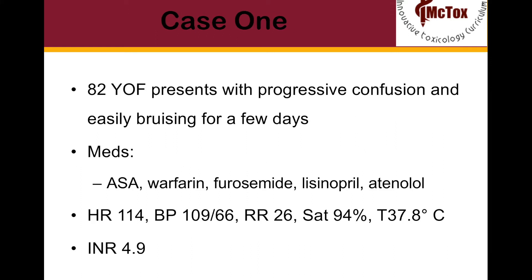Case 1. You have an 82-year-old female who presents with progressive confusion and easy bruising for several days. Her medications include aspirin, warfarin, furosemide, lisinopril, and atenolol. Her vital signs are listed below. The nurse informs you that her INR has come back at 4.9. What could be the differential diagnosis for this patient, and how are you going to investigate it? And what are you going to do to manage this patient's coagulopathy?